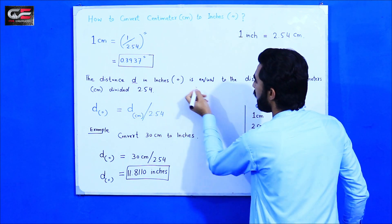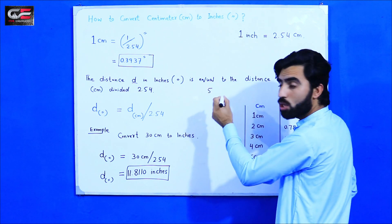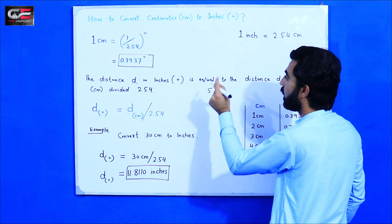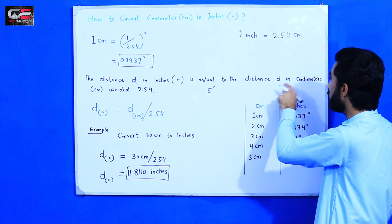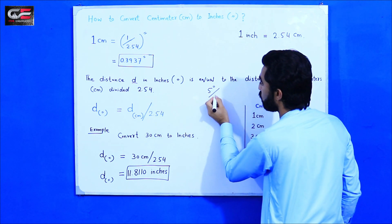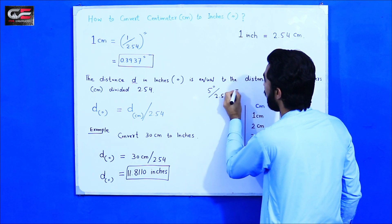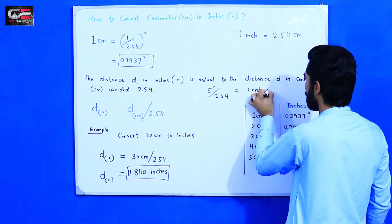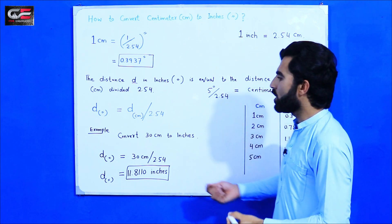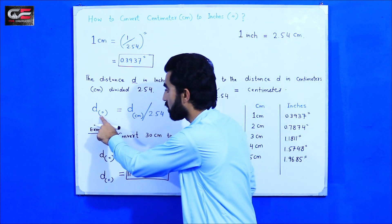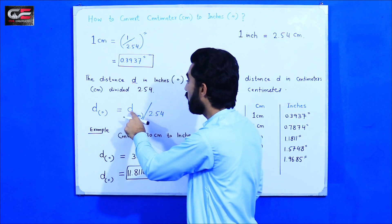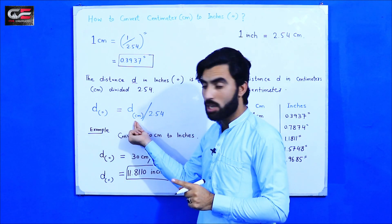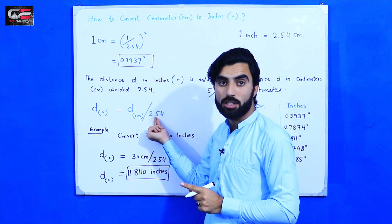For example, if you have five inches, the distance d in inches equals the distance d in centimeters divided by 2.54. So to find distance in inches, take the centimeter value and divide by 2.54 to get your result.